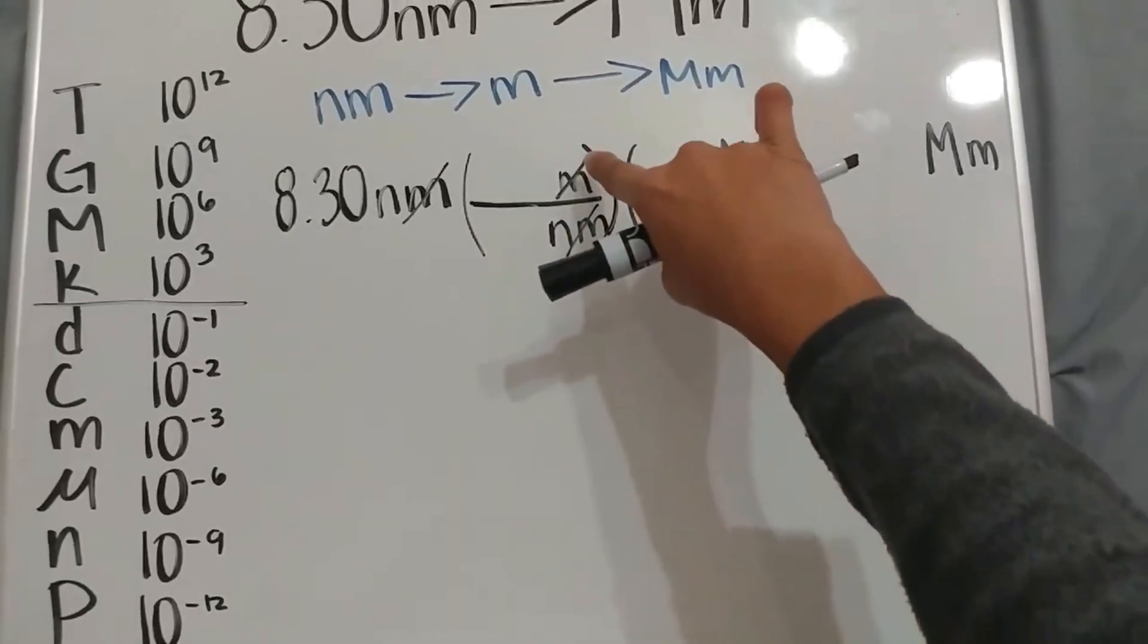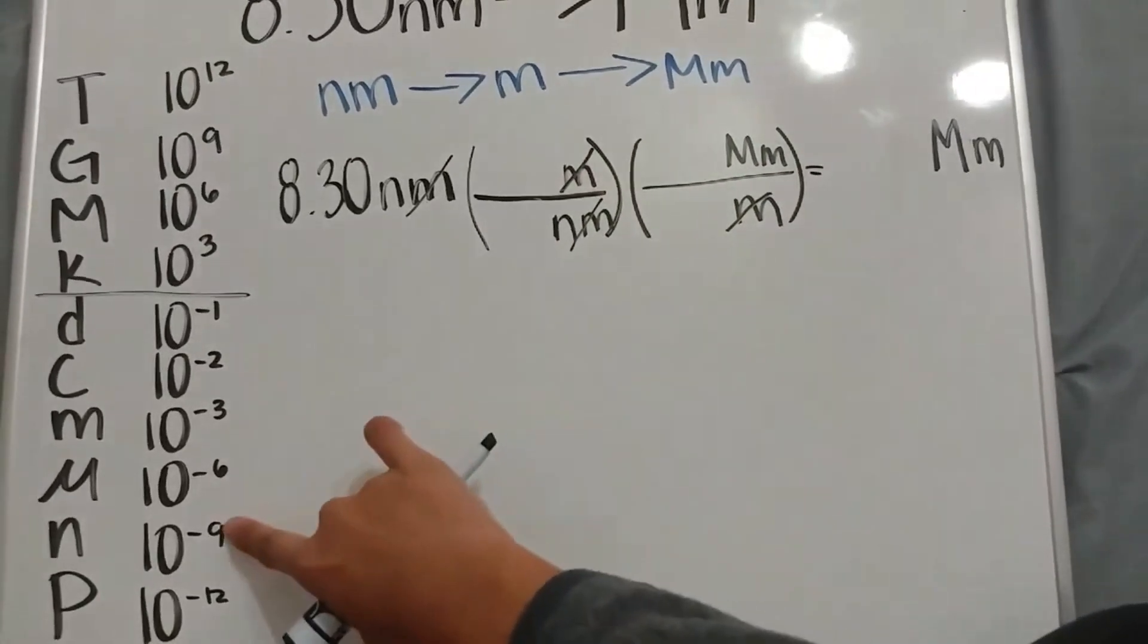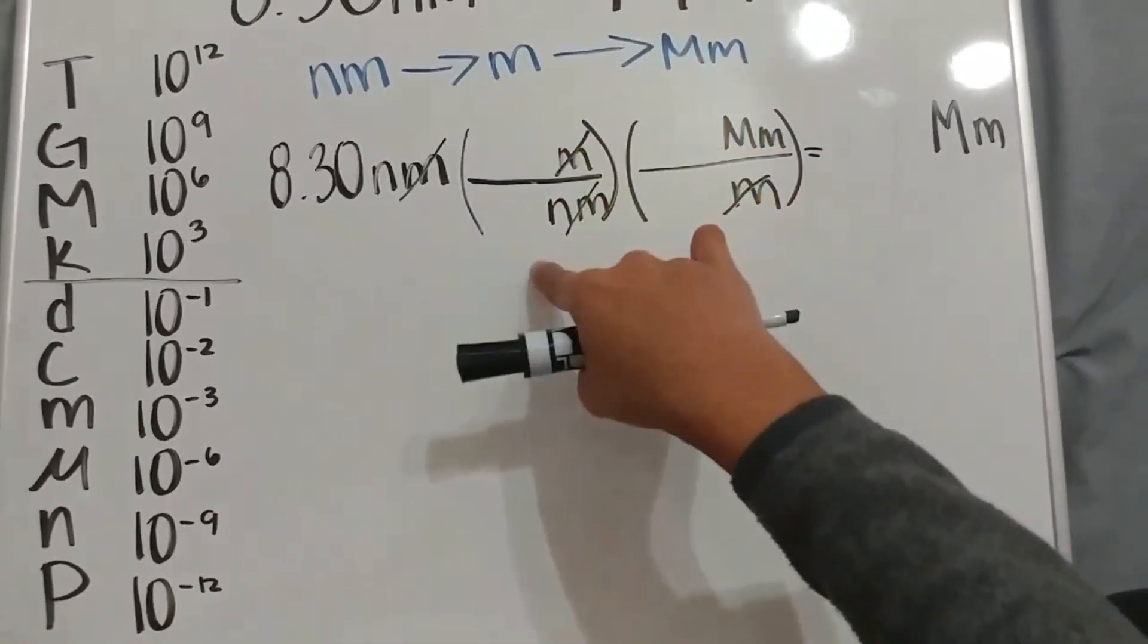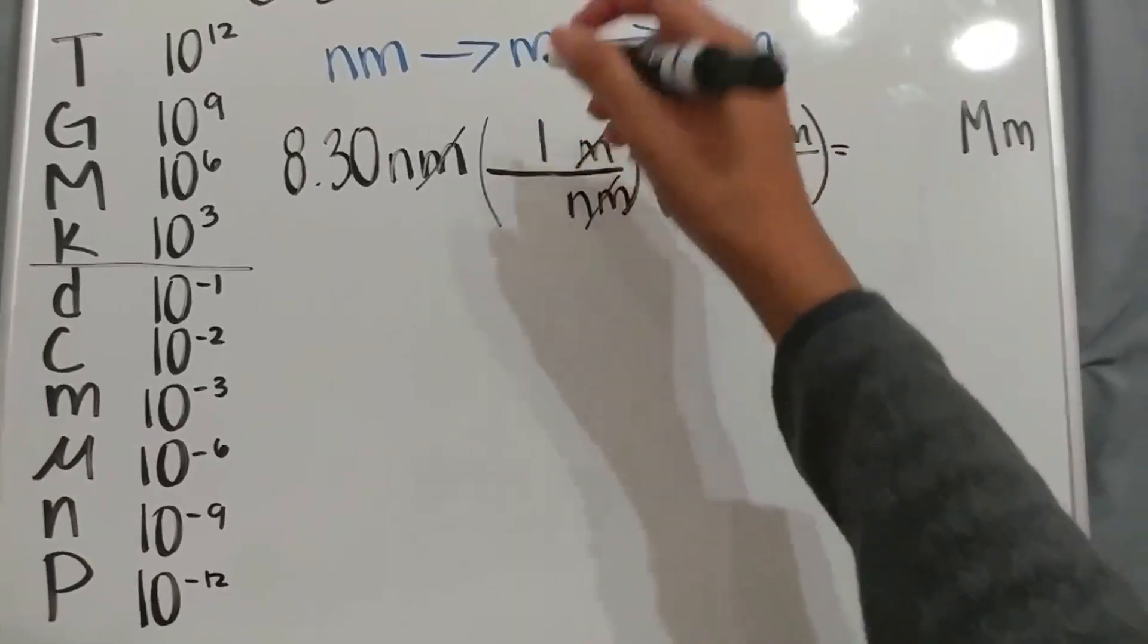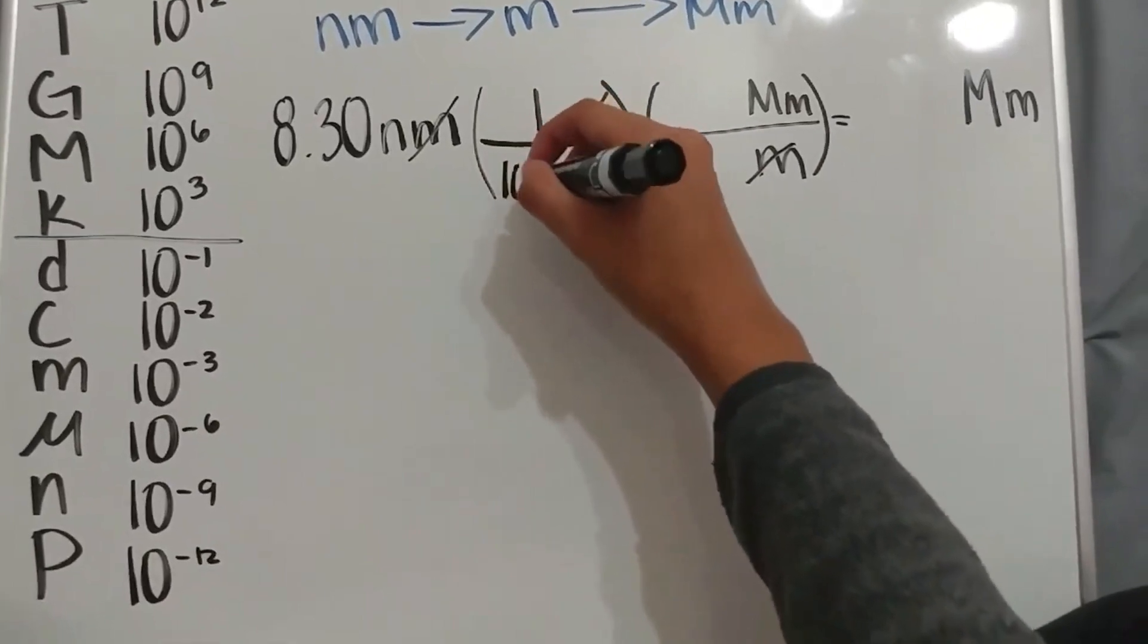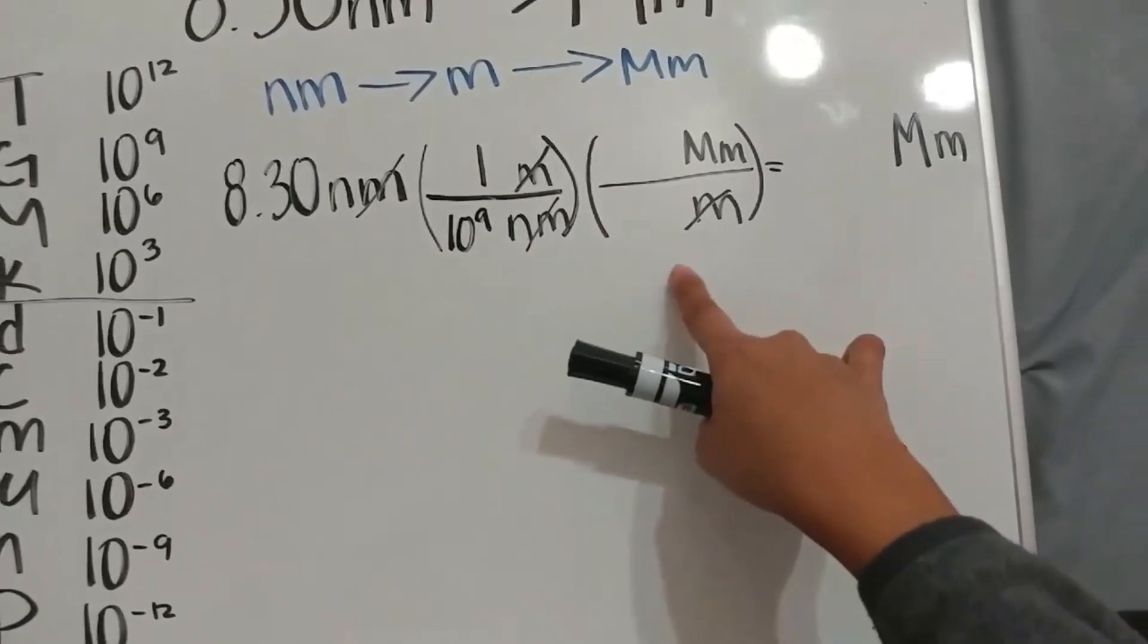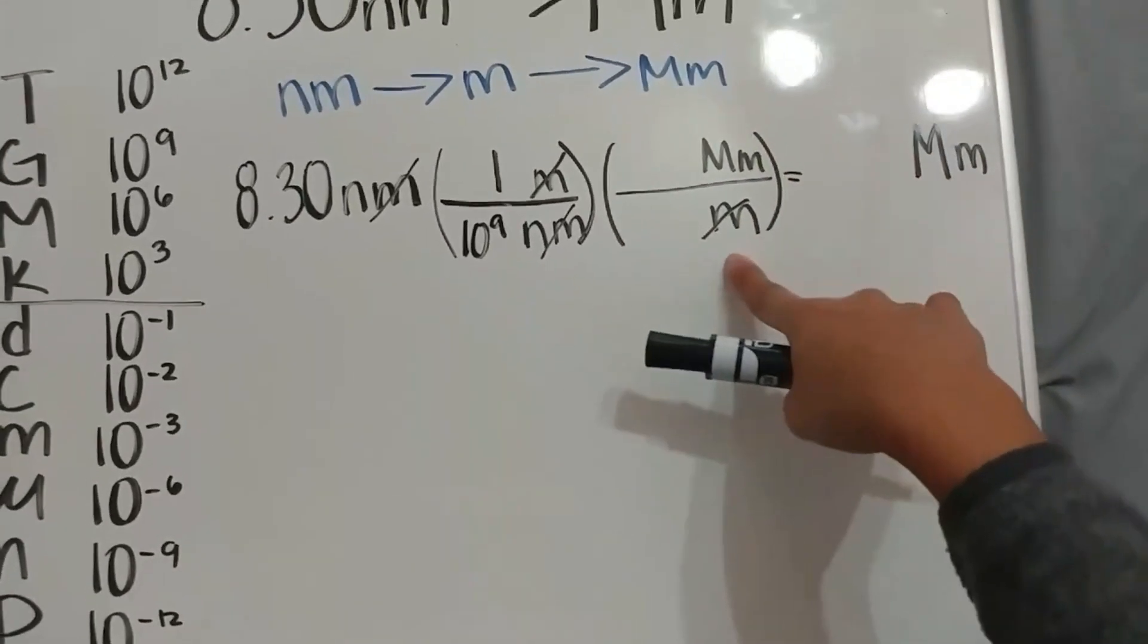So, meter is bigger than nanometer. As you can see, nano is 10 to the negative 9, and meter would be bigger, so the bigger unit would always have a 1, and nanometer, which is 10 to the negative 9, but the exponent is always positive, would be 10 to the 9th instead.